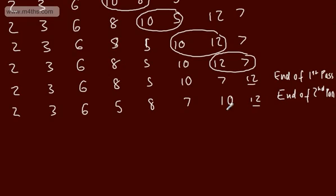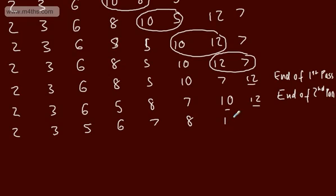Pass three: 2 and 3 — not swapping. 3 and 6 — not swapping. 6 and 5 — swapping. 6 and 8 — not swapping. 8 and 7 — swapping. 8 and 10 — not swapping; 10 is already locked down. End of third pass. 12 is in place, 10 is in place, 8 is in place. Each time I carry out a pass, I get one more item in the correct position.